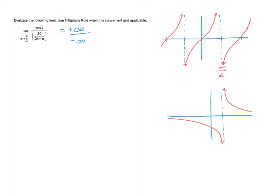This is not defined, so it's not the limit. However, we can use L'Hôpital's rule when we have infinity over infinity. We take the limit as x approaches pi over 2 from the left, and differentiate the numerator and denominator separately. The derivative of tangent is secant squared of x.